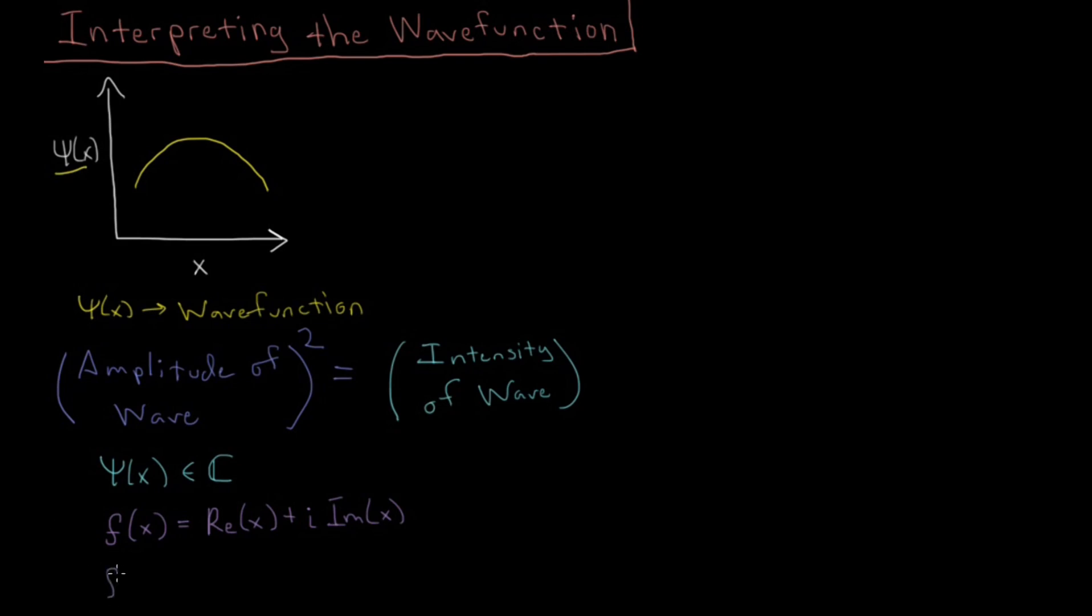So if we take what we call the complex conjugate of this, which we'll denote by this star, so moving forward whenever you see this star, that means we're taking the complex conjugate of a function. That's just going to be the real part again, and then we switch the sign on the imaginary part. So it equals negative of the imaginary part.